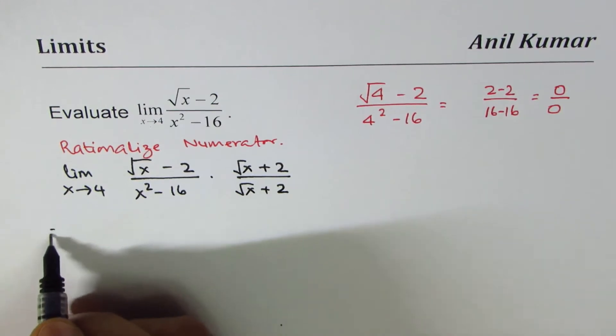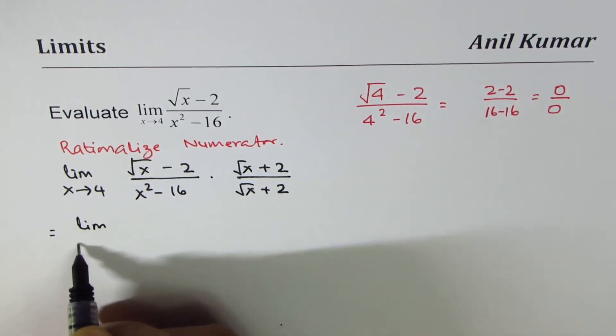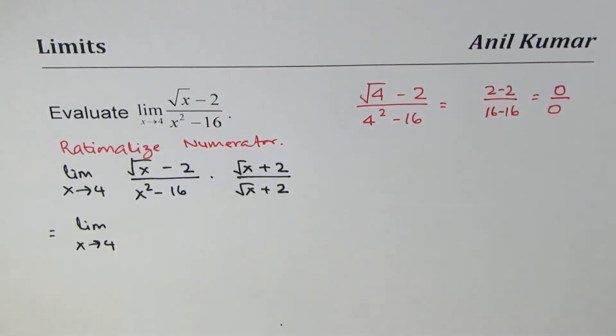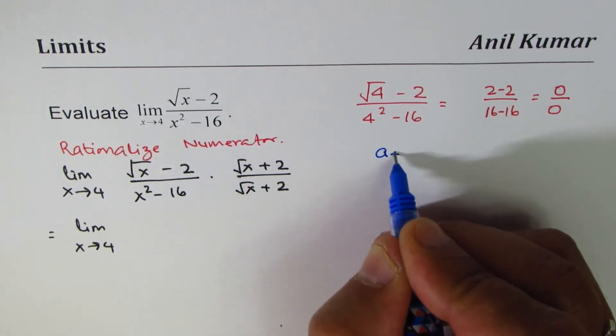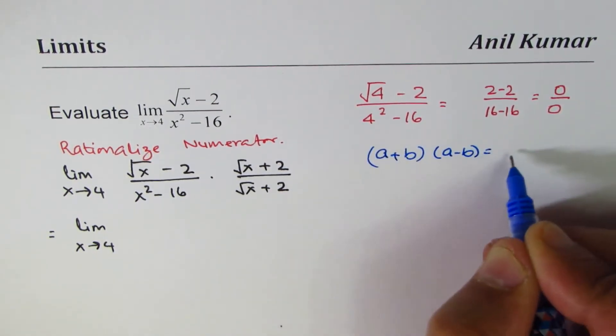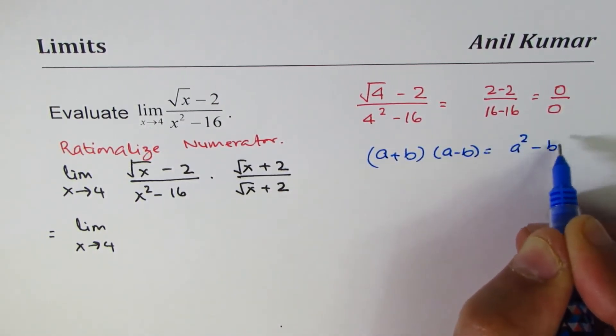So when you do that, we get limit x approaches 4. A plus b times a minus b is what? As you know, a plus b times a minus b is difference of squares, a squared minus b squared. So when you multiply this, we get square of square root x, which is x.